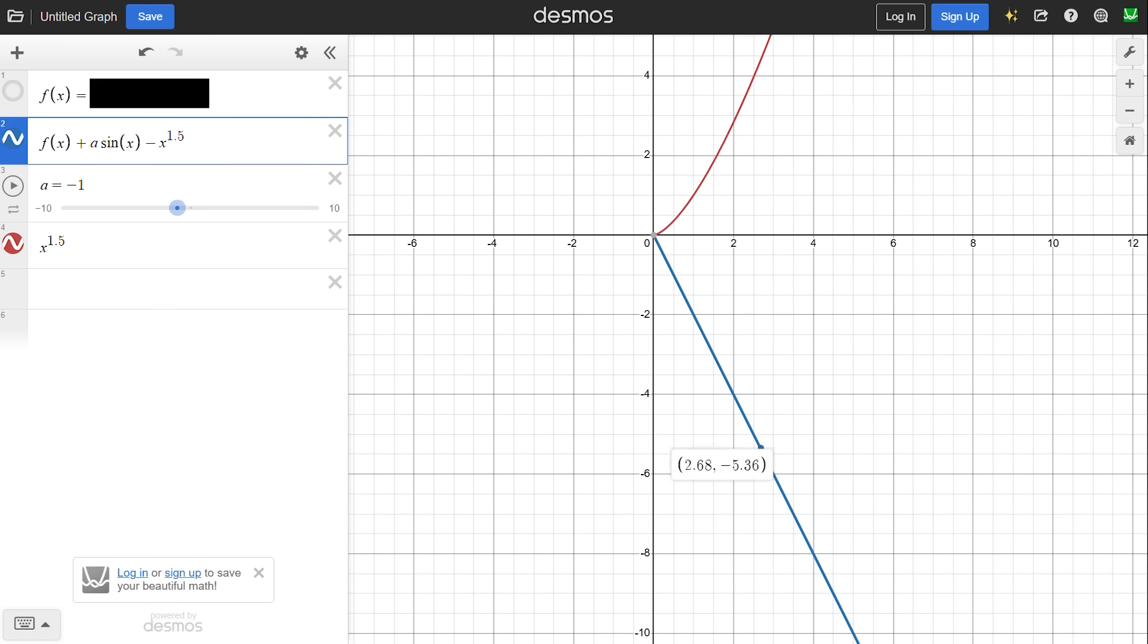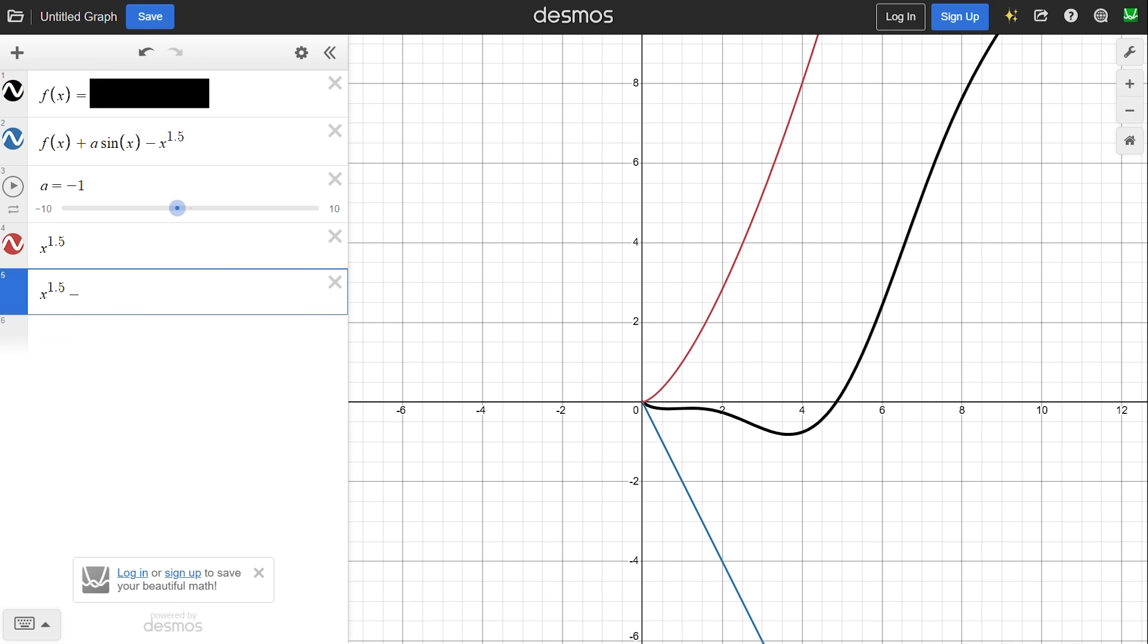And now we have a straight line, which we can quickly identify to be negative 2x. So our original function must have been x to the power of 1.5 minus 2x plus sine of x. And look at that, we were right.